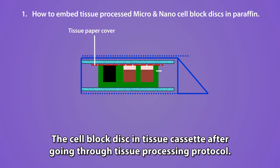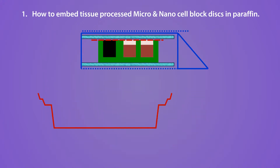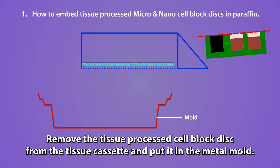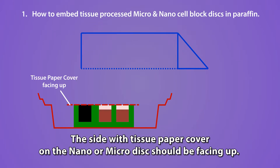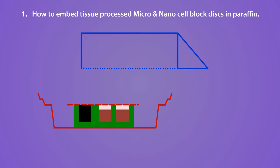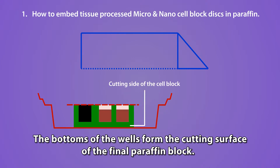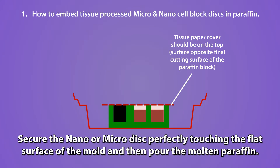After going through the tissue processing protocol, remove the tissue-processed Cell Block Disc from the tissue cassette and place it in the metal mold. The side with the tissue paper cover on the Nano or Micro Disc should be facing up. The bottoms of the wells in the Nano or Micro Disc, with concentrated specimen, face down — as these bottoms form the cutting surface of the final paraffin block. Secure the Nano or Micro Disc perfectly touching the flat surface of the mold, then pour the molten paraffin.